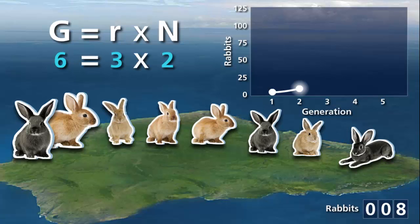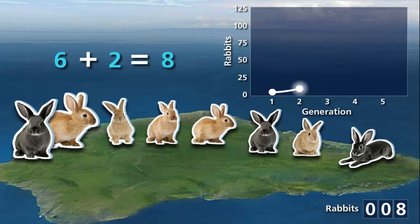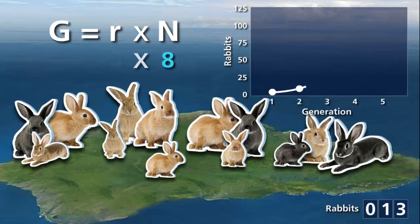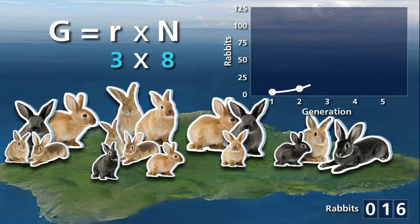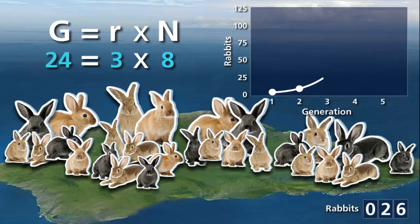After each generation, the new rabbits are added to the existing population, such that N in generation 2 equals G plus N from generation 1, or 6 plus 2, which is 8. The population follows an exponential curve that increases in slope each generation.